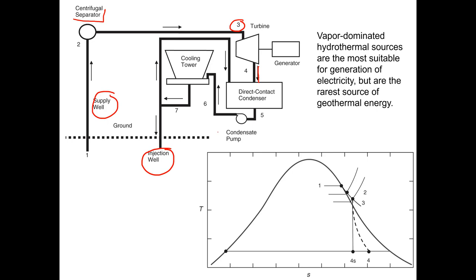The way that this source can be looked at: we have here state one. We'll assume a saturated vapor coming out of the ground. As it goes through the centrifugal process to the turbine, we see here a drop in pressure. The pressure is going to be decreasing as it approaches state three.